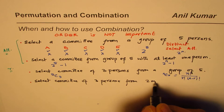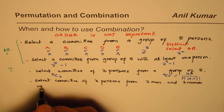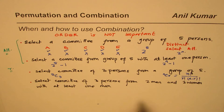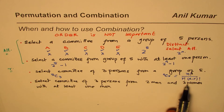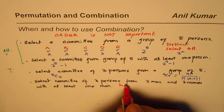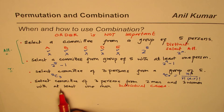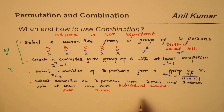Now let's modify the question: select a committee of three persons from two men and three women, with at least one man. Now all individuals are not distinct — we have two men and three women. In such cases you consider individual cases. At least one man means you could have one man or two men, since there are only two men in total.